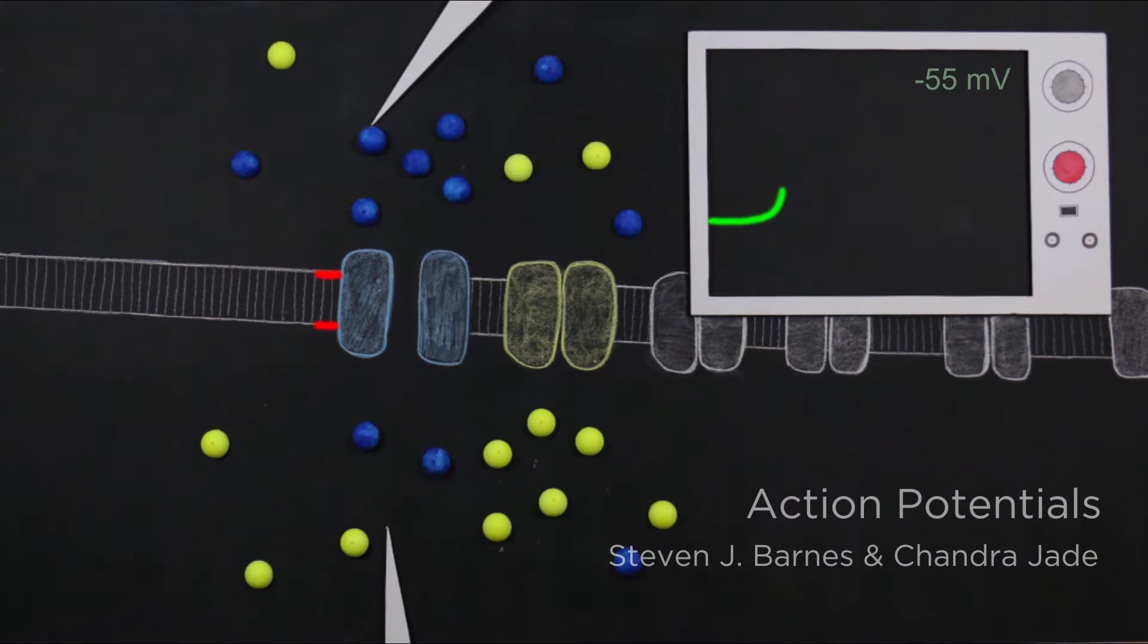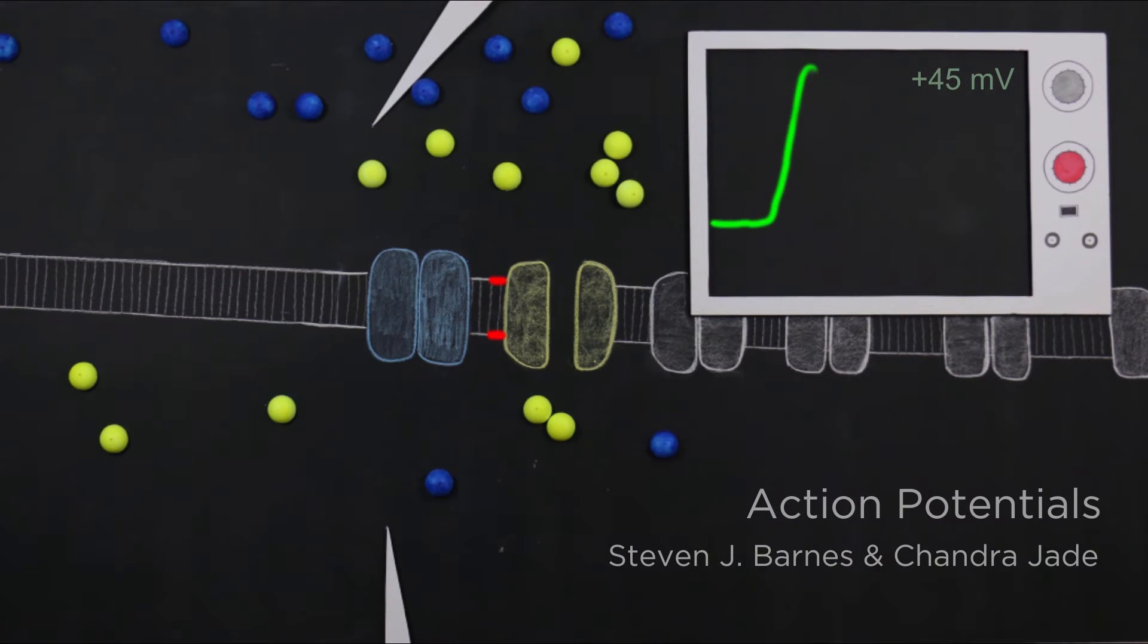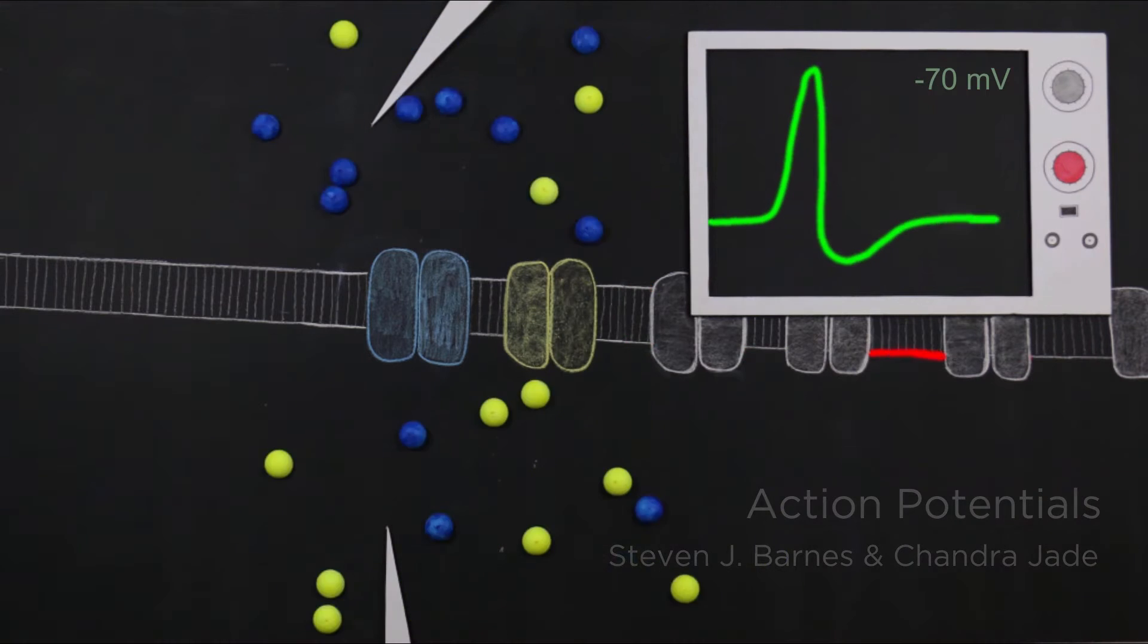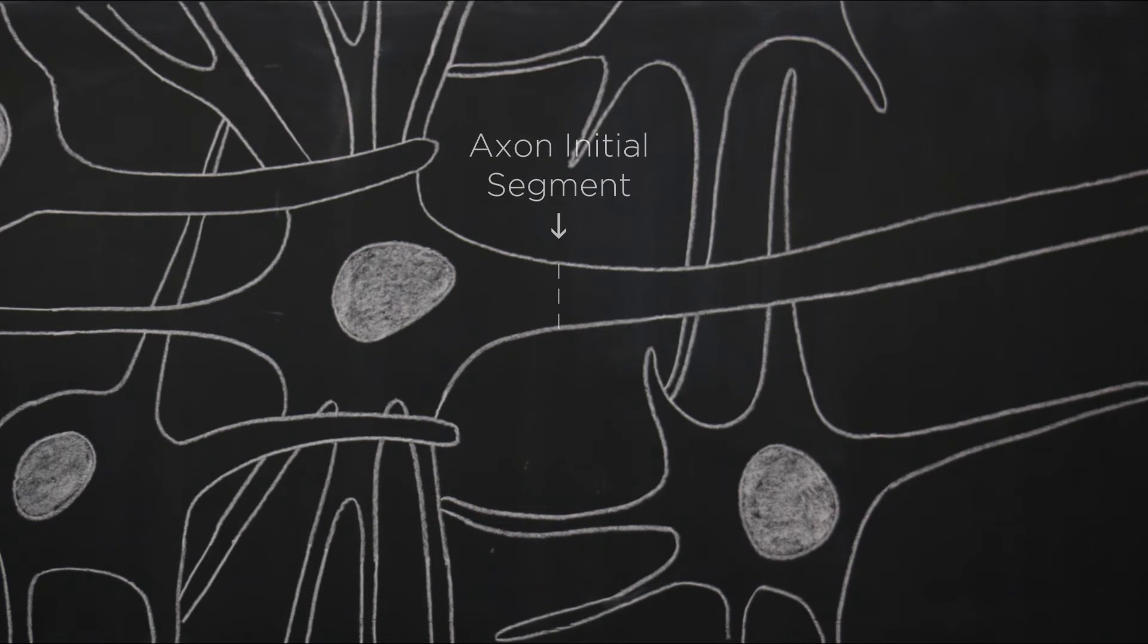In this lesson we will take a much closer look at the mechanisms by which an action potential is generated at the axon initial segment. Let's focus in on the axon initial segment where action potentials originate.